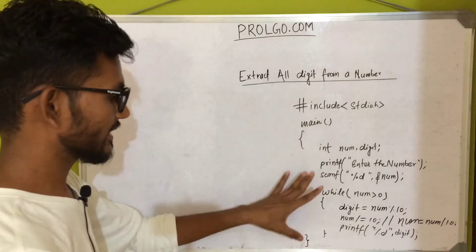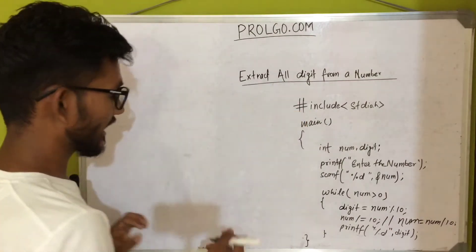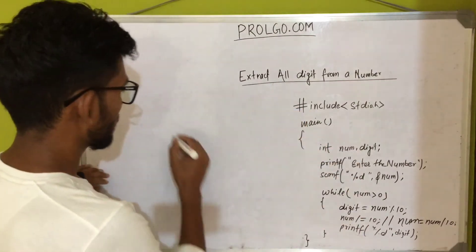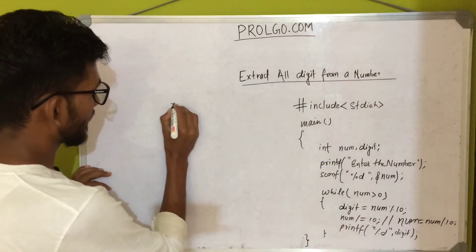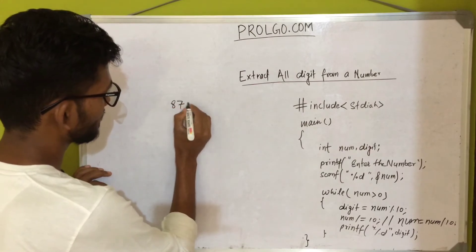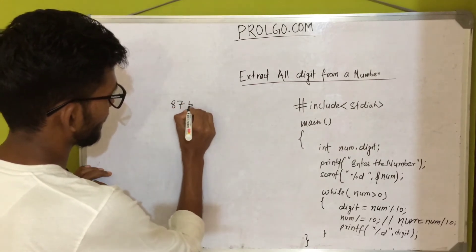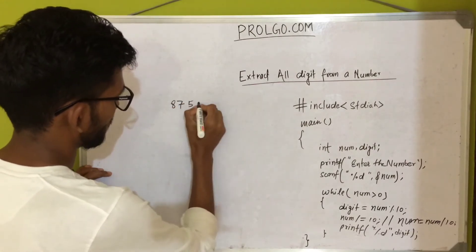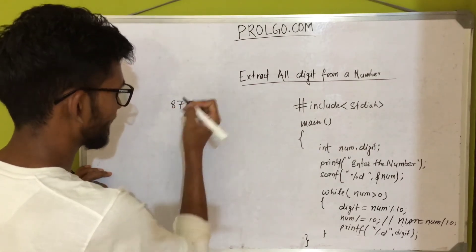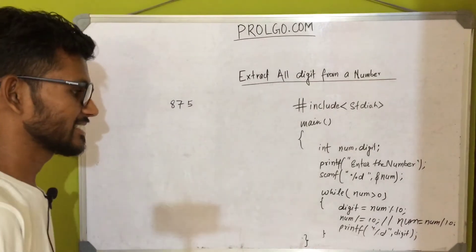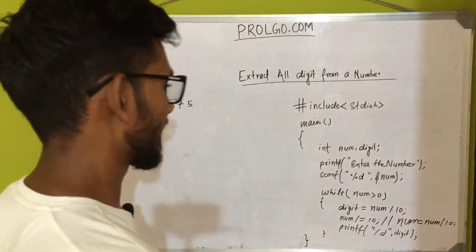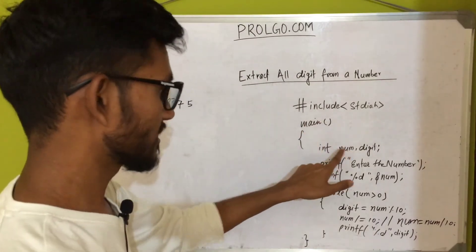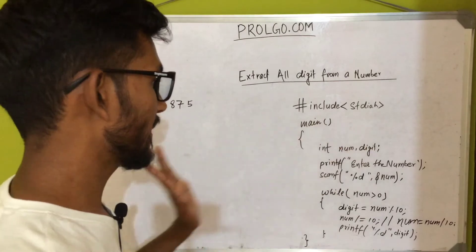We print 'digit' inside the loop, which will print all the digits of that number. Let's do a dry run so everything will be clear. I'm taking the number 875 — just three digits so it won't take too long.